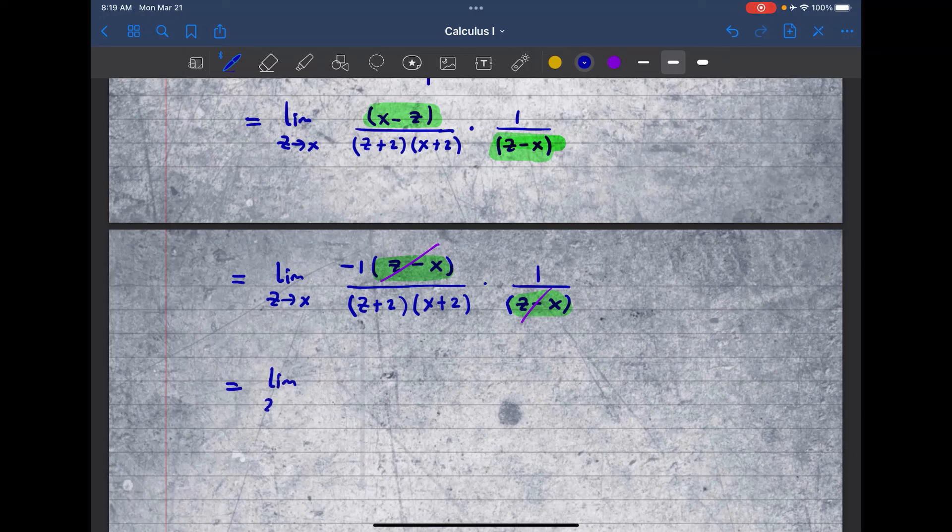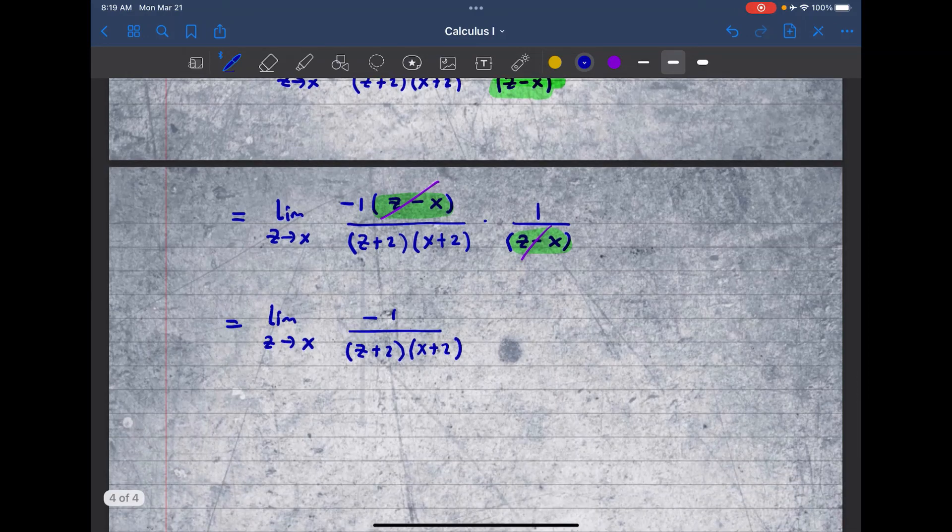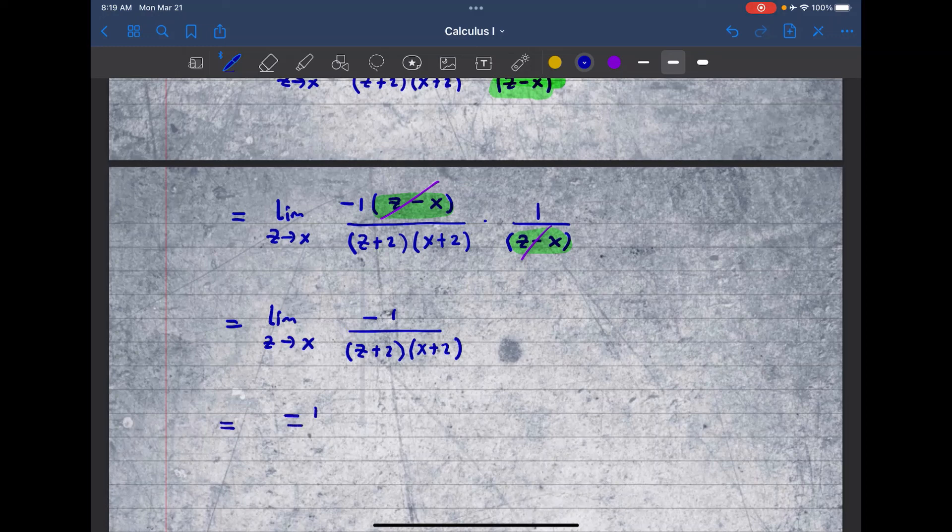This will be the limit as z approaches x of negative 1 over z plus 2 and then x plus 2. Now I can plug in z's approaching x. So substitute x into z. You'll have negative 1 over. So here I'm going to replace with x because z is approaching x. So you'll have x plus 2 times x plus 2.